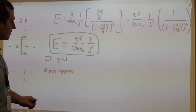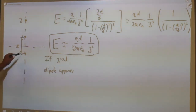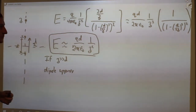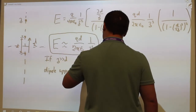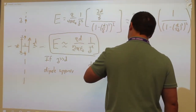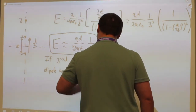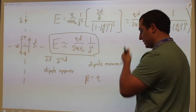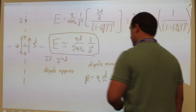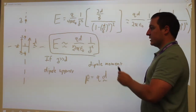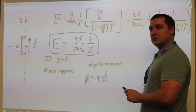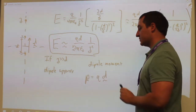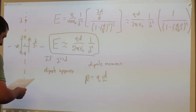I can define one more thing. If I take d to be the vector between the negative charge and the positive charge, then I can define the dipole moment, given the symbol p like momentum, which is the magnitude of the charge times that d vector. This vector goes from the negative charge to the positive charge — it's always pointing at the positive charge. So the dipole moment also points from the negative charge to the positive charge. That's important: if you get that wrong, all of your directions will be wrong.